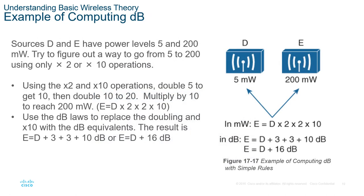Here is an example using sources D and E with power levels of 5 and 200 milliwatts. Using powers-of-2 and powers-of-10 operations: double 5 to 10, double 10 to 20, then multiply by 10 to reach 200 mW. So E = D × 2 × 2 × 10. Applying dB laws, that is D + 3 + 3 + 10 dB = D + 16 dB. This gives us the basic computation from 5 milliwatts to 200 milliwatts.